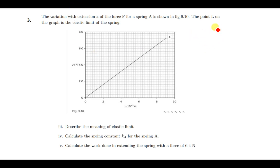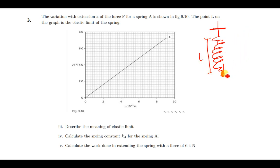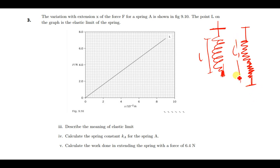For instance, you have a spring with a natural length L. When you stretch this spring to any length L1 and then release it, it goes back to its original form — meaning it never reached the elastic limit.